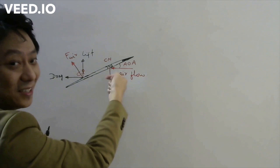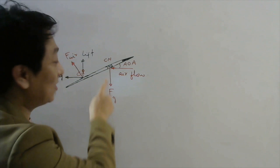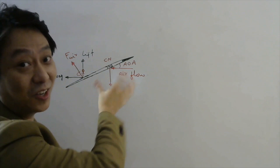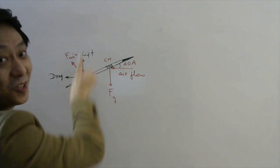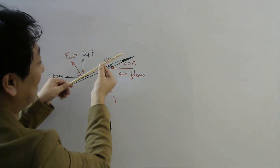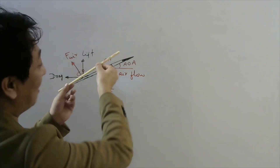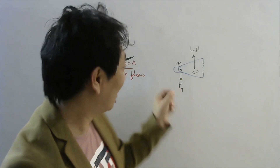The javelin is going forward, so with respect to the javelin, the airflow is backward. Now let's analyze what kind of torque these forces produce about the center of mass. The force of gravity passes through the center of mass itself, so it creates no rotation. But the lift force, acting behind the center of mass, will create a torque that tries to rotate the javelin — the tip rotates downward. That is the reason why the tip of the javelin bends down.